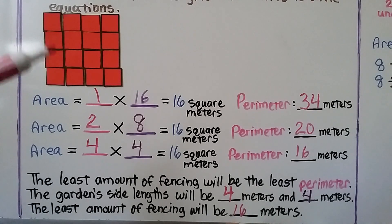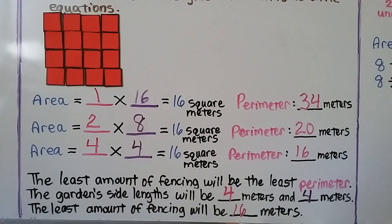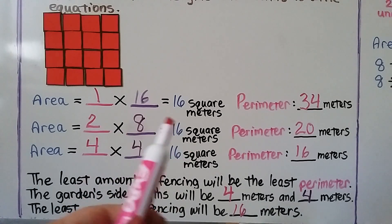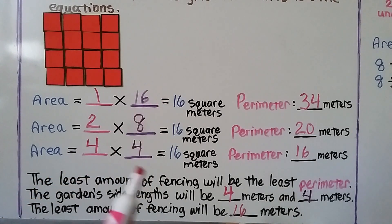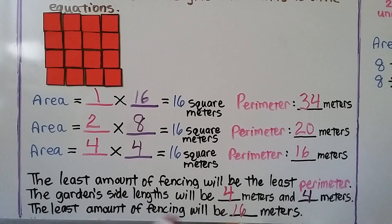You can take grid paper and draw rectangles, or use unit squares like this, to make rectangles and find the dimensions of rectangles with an area of 16 square meters, then count their perimeters.